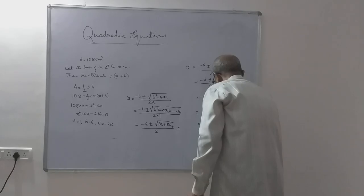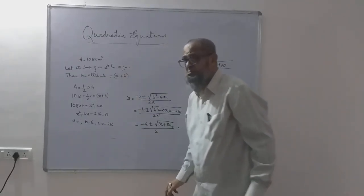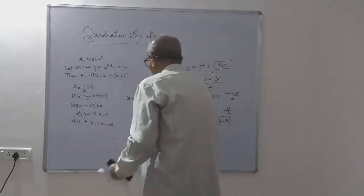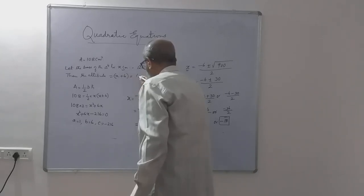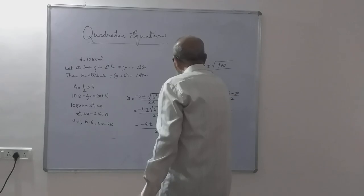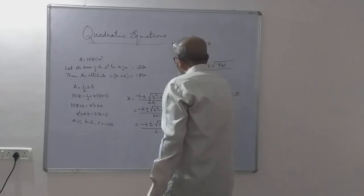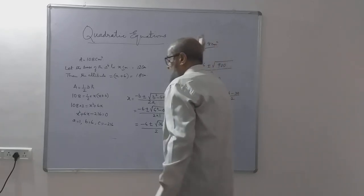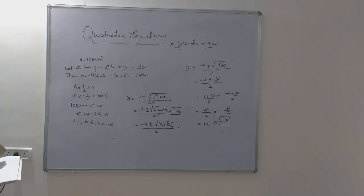Since the base of a triangle cannot be negative, x = 12 centimeters. So the altitude h = x + 6 = 18 centimeters. Verification: area = (1/2) × 12 × 18 = 108 square centimeters. ✓ You got the correct answer for 3 marks. I will stop there — we will have to complete the remaining content in one more video. If you have any doubts, you can call me and ask. Thank you.